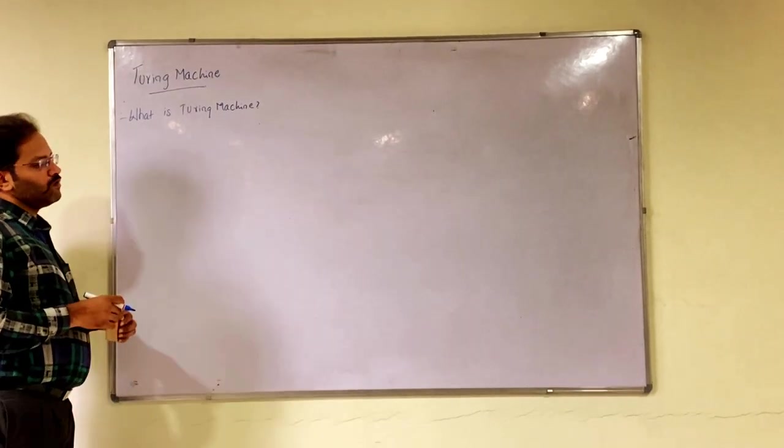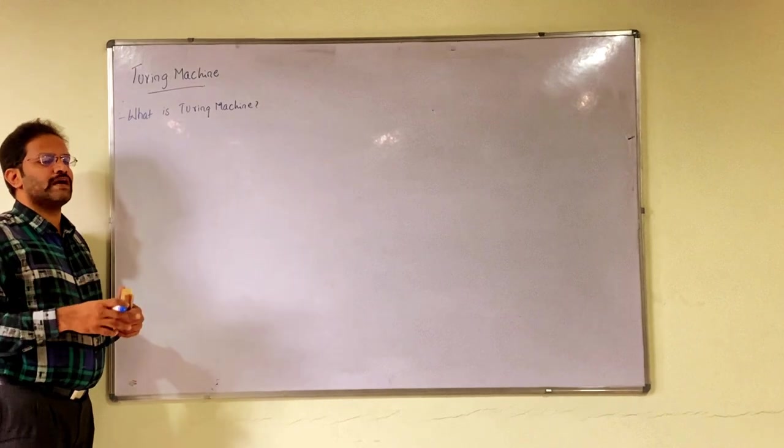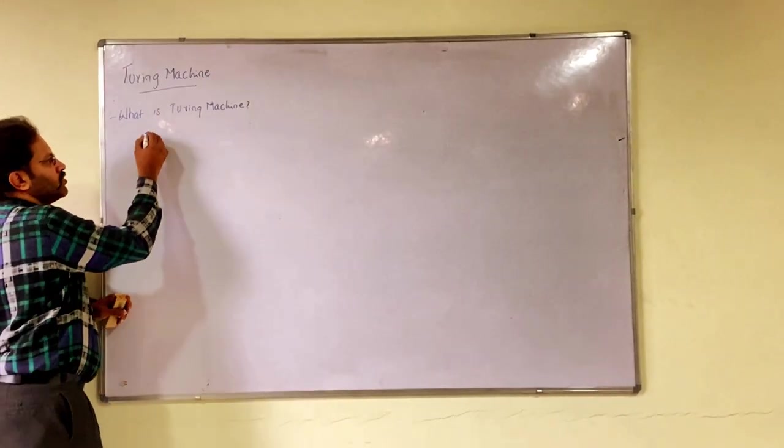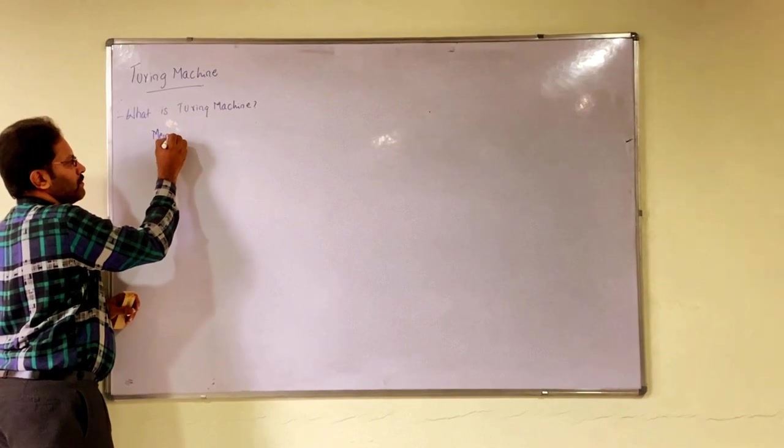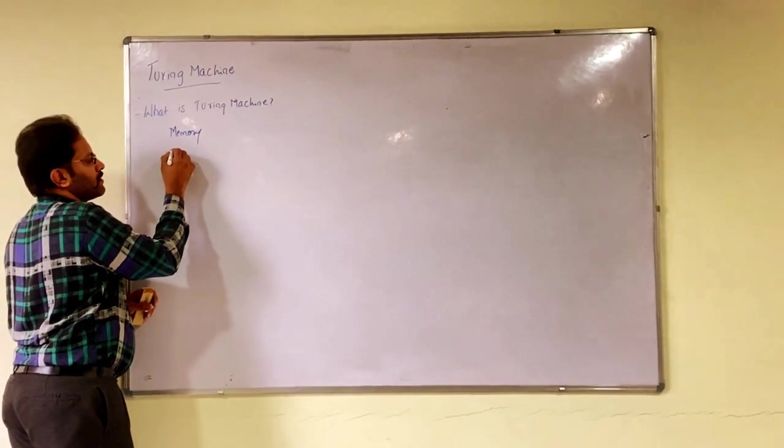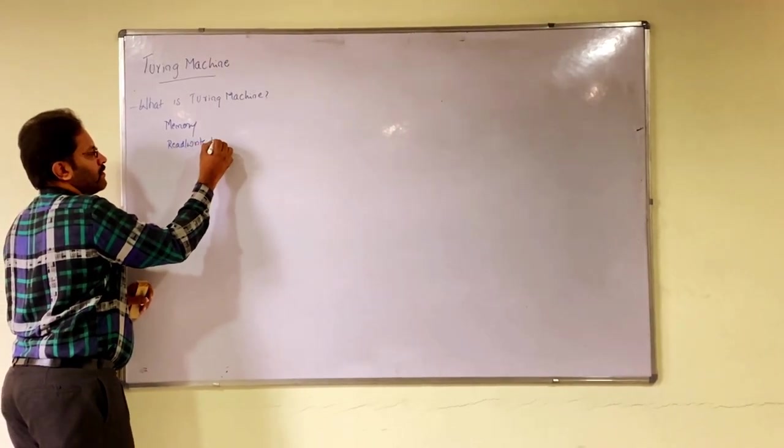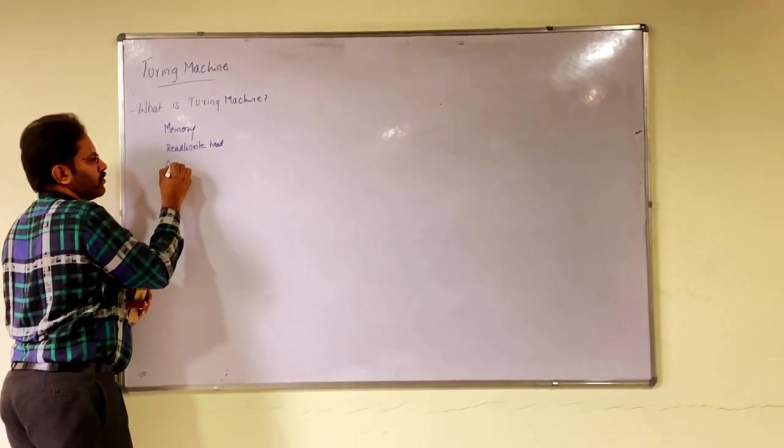Now when we say what is Turing machine, Turing machine should be understood in few things. The moment you say Turing machine, you should know few things with this. One is memory part of it, the read-write head, and the control unit.